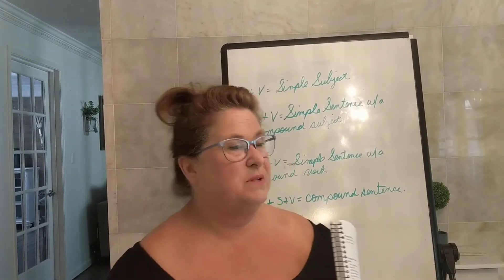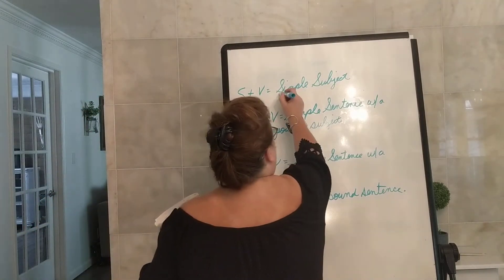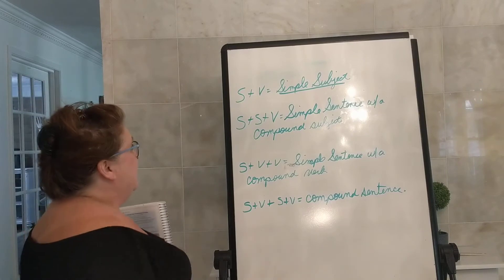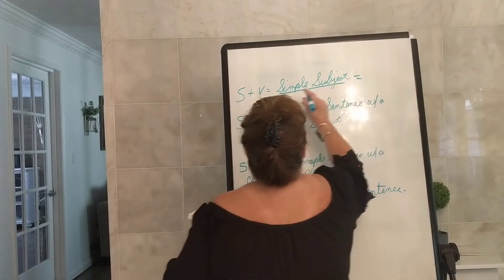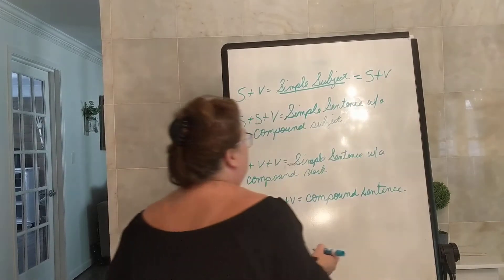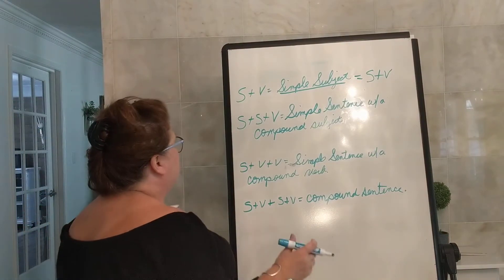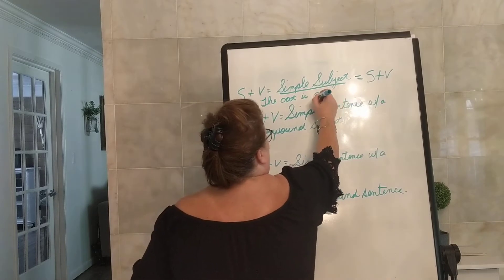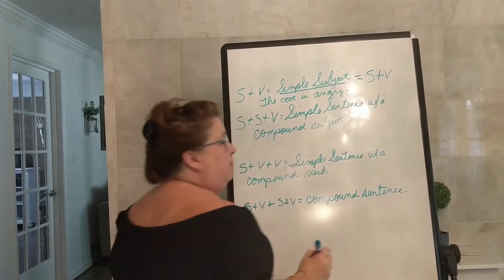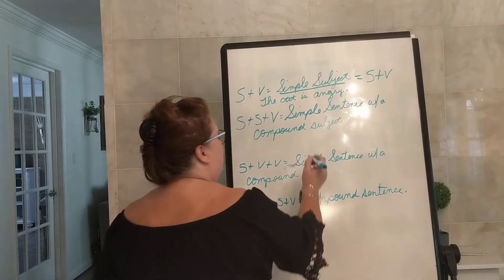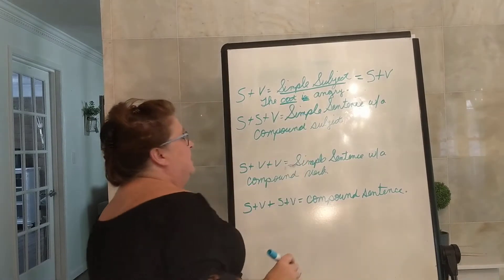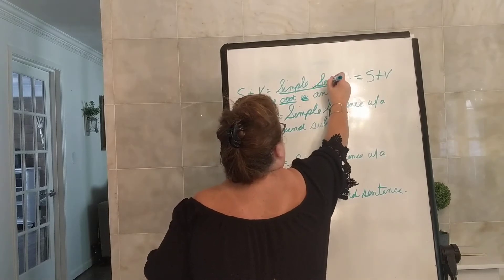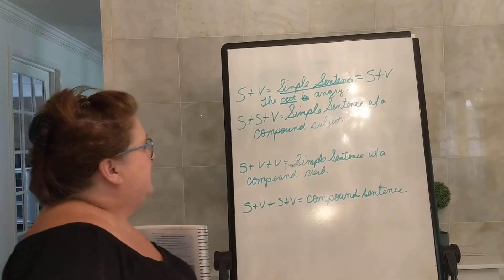Today we are talking about different types of sentences. The first type I want to talk about is a simple sentence. Write 'simple sentence' on your paper and underline it. You can put equals and write subject plus verb — that is a simple sentence, a subject and a verb. An example: 'The cat is angry.' Our verb is 'is' and our subject is 'cat.' A subject plus a verb is a simple sentence.